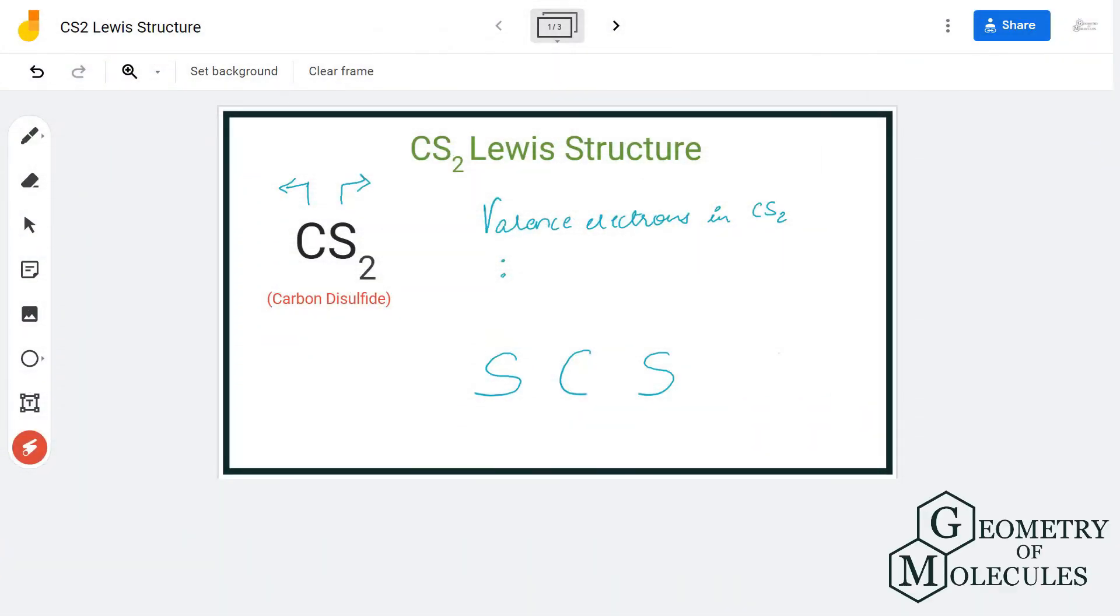Hi guys, in this video we are going to determine the Lewis structure for carbon disulfide. It is made up of one carbon atom and two sulfur atoms. To understand the Lewis structure for this molecule, we will first go through its total number of valence electrons.